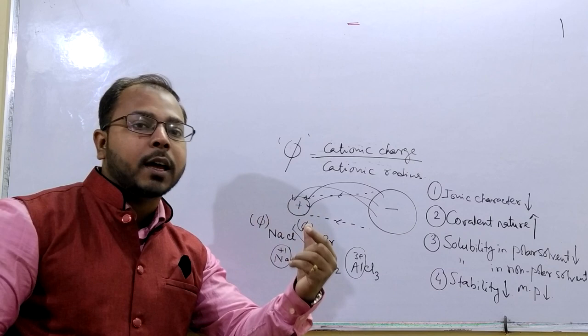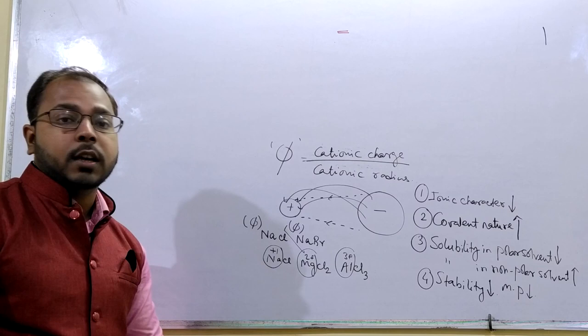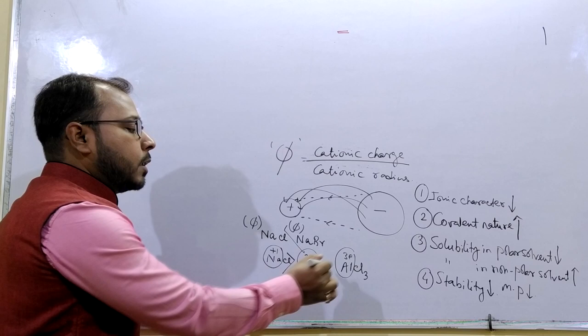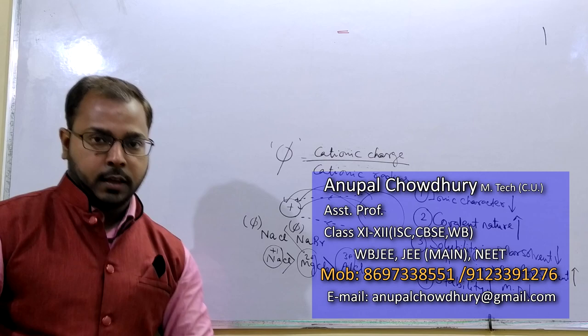And that is why phi of Na is getting increased. That is why if the question comes that arrange them according to their ionic character, then obviously NaCl must be higher than MgCl2 must be higher than AlCl3.